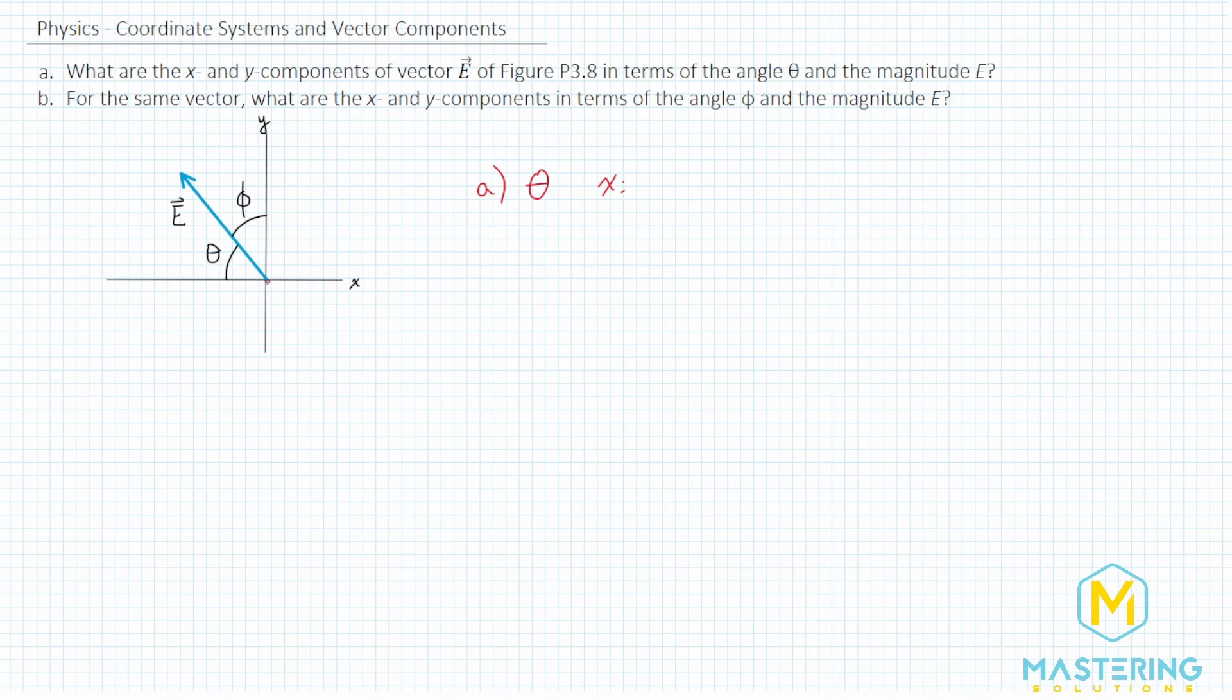So for theta, the x component is adjacent to the angle. So we'll be using cosine, and that is from SOHCAHTOA. So sine of the angle, cosine of the angle, and tangent of the angle. Since we're using cosine, let's write that. Cosine of theta is equal to the adjacent over the hypotenuse.